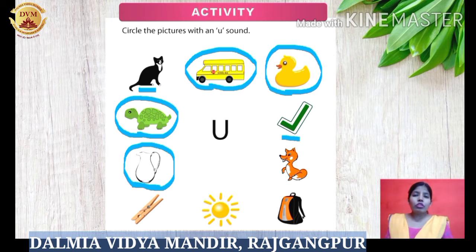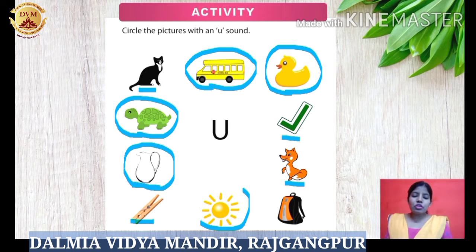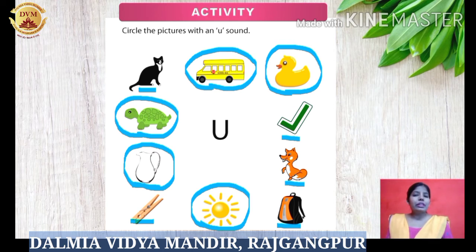Here is a picture of a fox. Fox has an O sound, not U sound, so we will not circle this picture. Next picture is of a peg – we have learned this in E sound words. Since it does not have U sound, we will not circle this picture. Now the next picture is of sun – S U N – sun has U sound, so we will circle this picture. Here is a picture of a bag – it doesn't have U sound, so we will leave this picture. After completing this activity, we circled the pictures of bus, duck, turtle, jug, and sun because they have U sound.